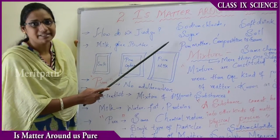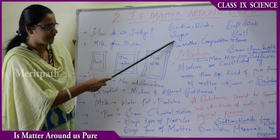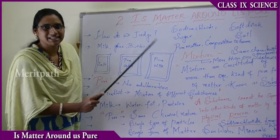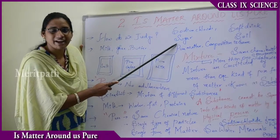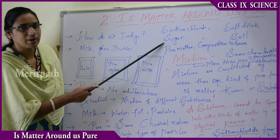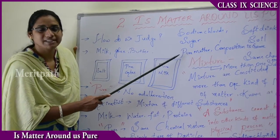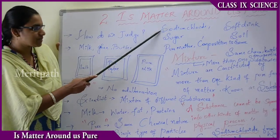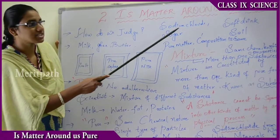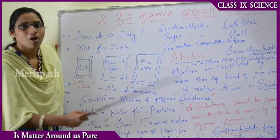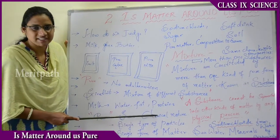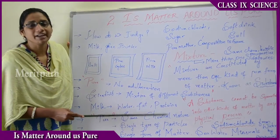Let us see some examples. Sodium chloride and sugar are good examples of pure matter — sodium chloride cannot be divided into different substances; it is a single crystal substance with the same composition. In contrast, soft drinks, soil, seawater, and minerals are examples of mixtures, having different compositions, different types of particles, and different chemical properties.